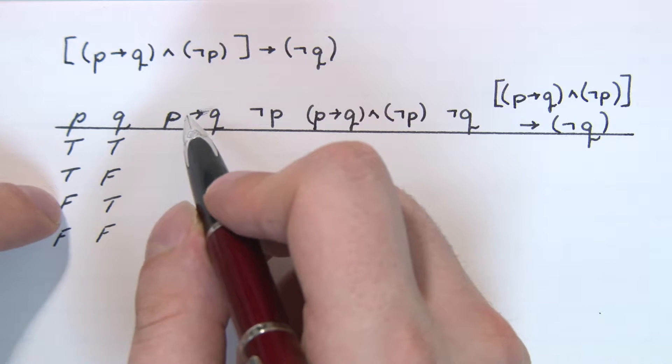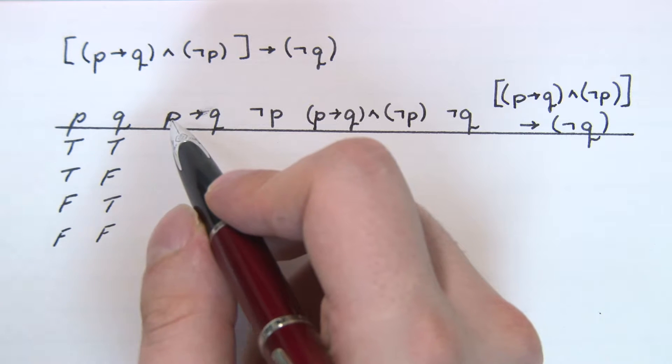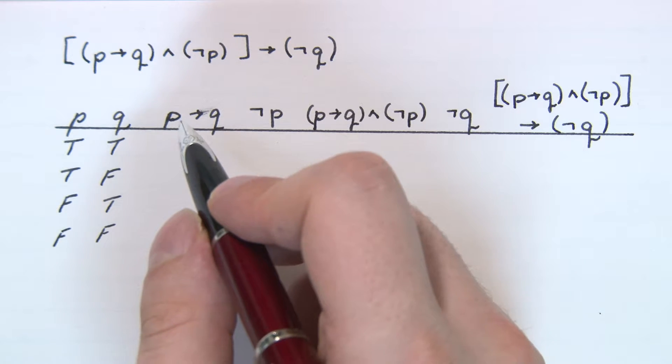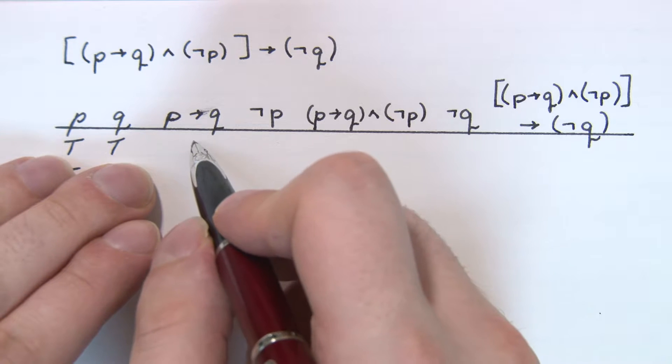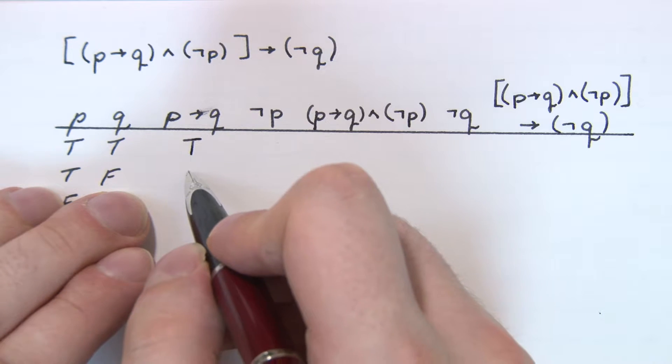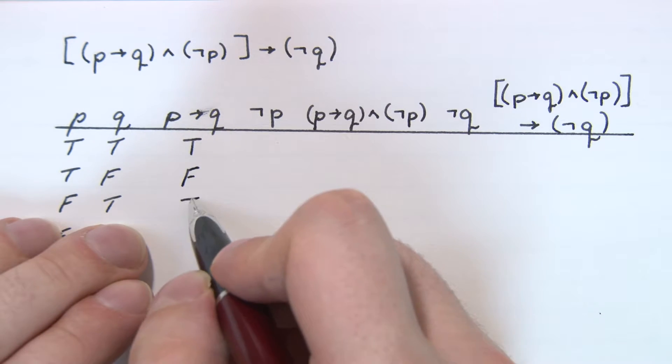So the implication only returns a false when the first proposition is true and the second proposition is false. True implies true - that's true. True implies false - that's the only time when it's false. False implies true - that's true.